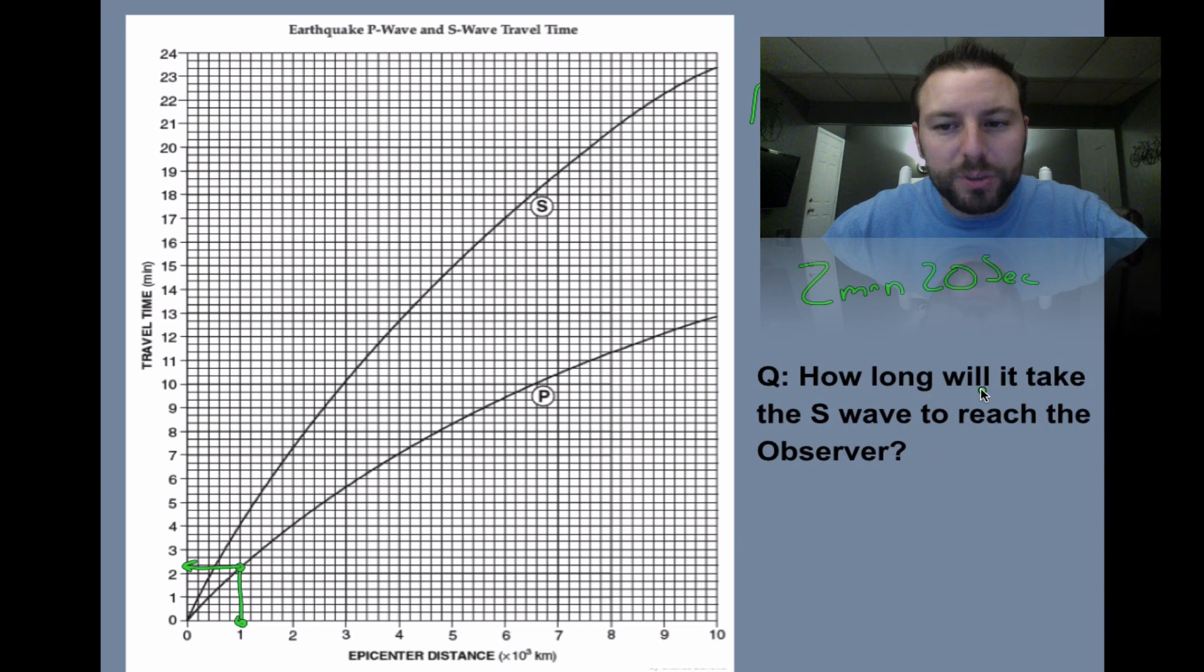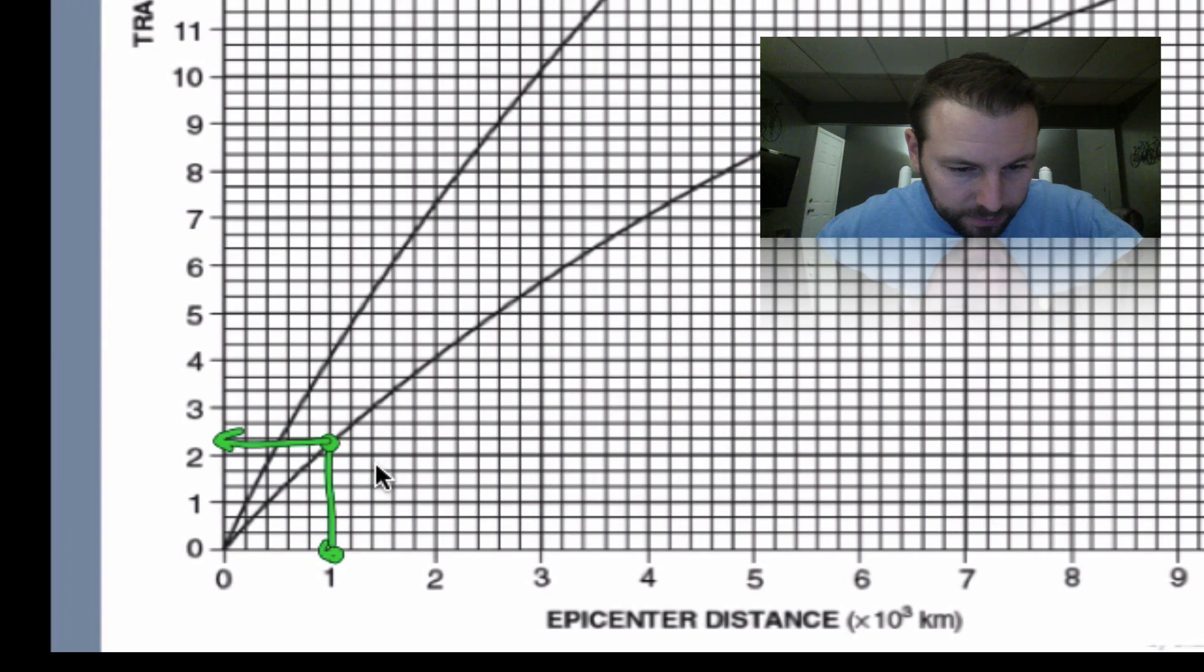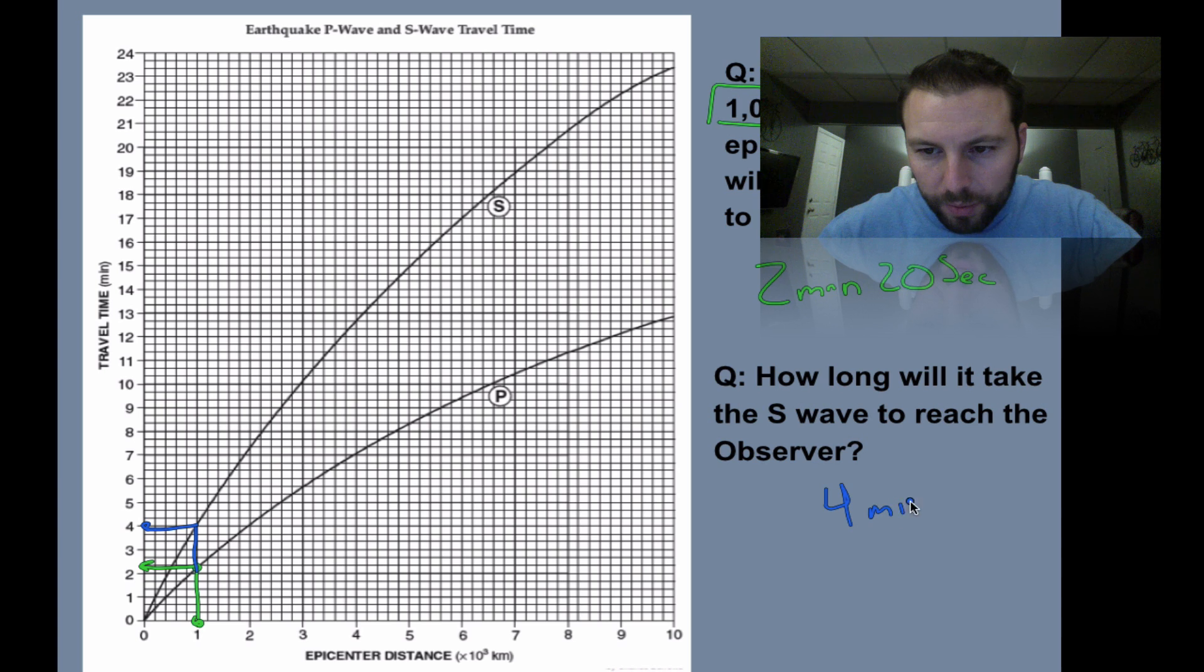How long will it take the S wave? Well, remember, the S wave is slower, so it should take longer. We continue our line up to where it hits this secondary wave over, so it's 4 minutes for the S wave to reach the observer. That's a basic component of using this.